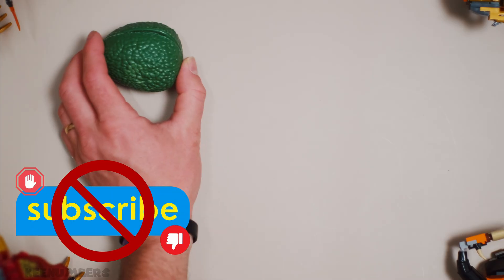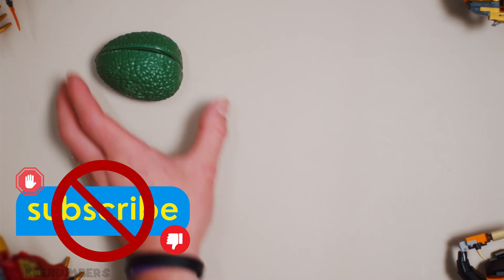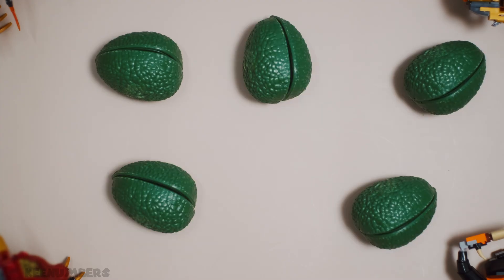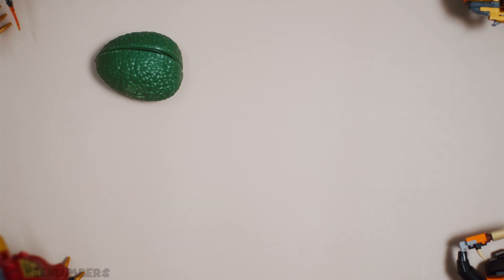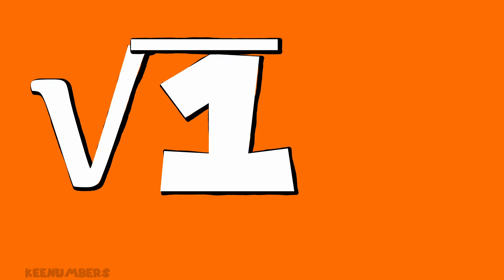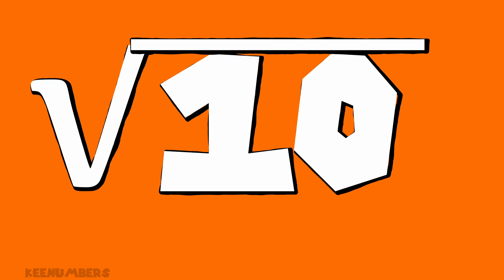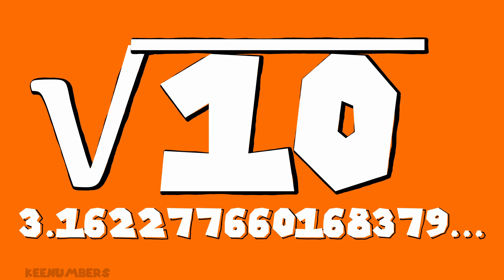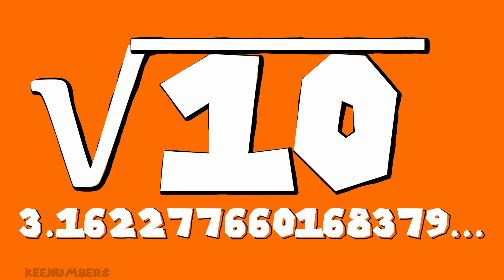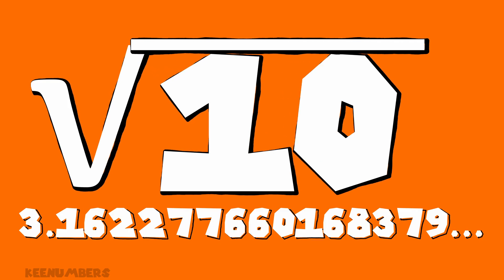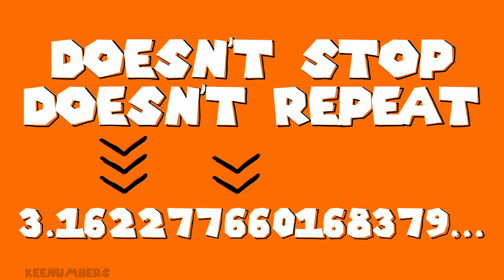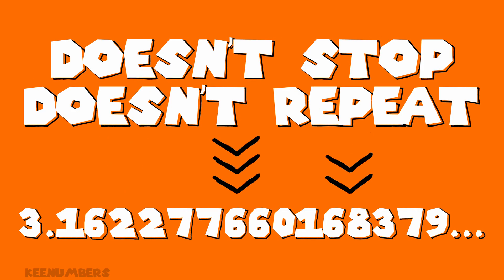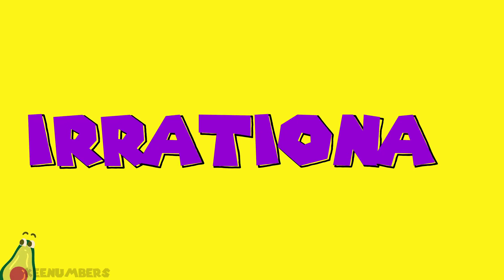Don't subscribe. Don't join the Greater Gators class. Otherwise you might learn an unimportant math skill like irrational numbers — a skill I rate 1 out of 5 avocados. The square root of 10 is approximately 3.162277660168379… The decimal doesn't stop and there are no repeating patterns. That means it's irrational.